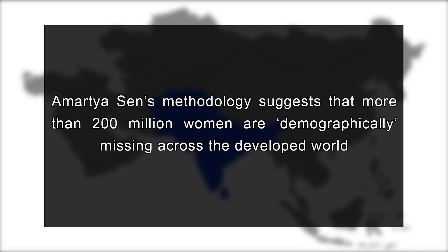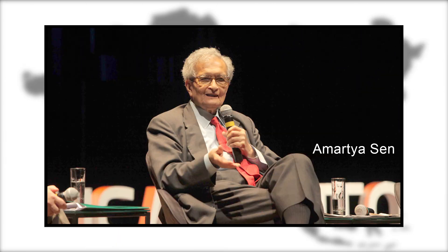Sen's methodology suggests that more than 200 million women are demographically missing across the developing world. This is meant to be an estimate of the total number of women who have died prematurely due to gender discrimination. His analysis revealed that the proportion of women was lower than one would expect if the birth and death rates of females were the same as that of men.